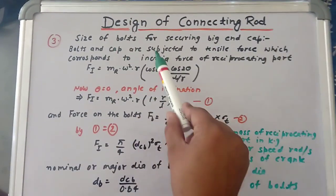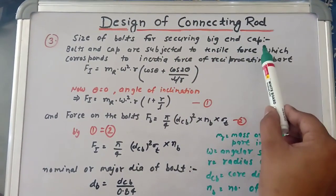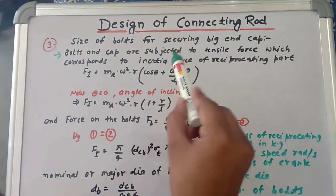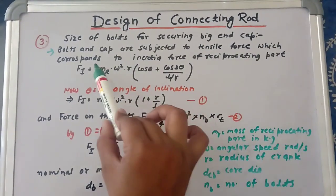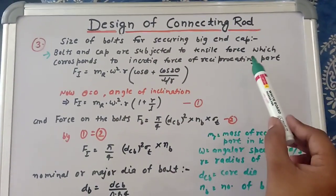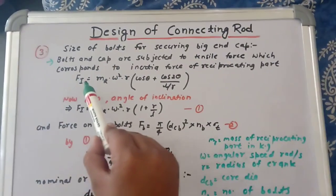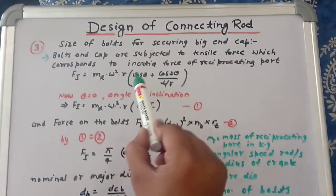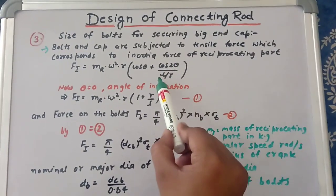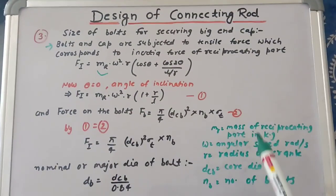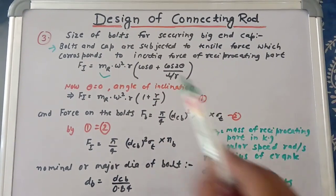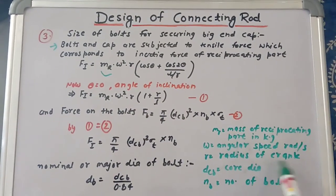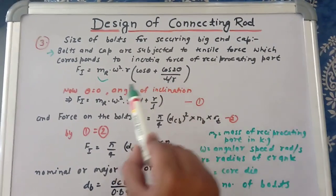The third step is the size of bolts for securing the big end cap. The bolts and cap are subjected to tensile force corresponding to the inertia force of the reciprocating parts, given by: Fi = mr · ω² · r · (cos θ + cos 2θ / (l/r)), where mr is the mass of reciprocating parts in kg, ω is angular speed in rad/s, r is the crank radius, and θ is the angle of inclination.